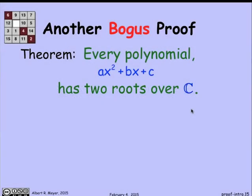There are other kinds of bogus proofs that come up. Let's just run through this one quickly. Here's a fact you know about roots of polynomials: every polynomial has two roots, at least over the complex numbers.